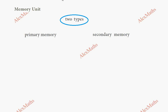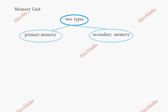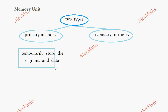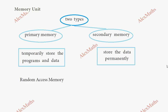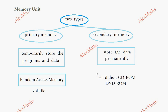There are two types of memory: primary and secondary. Primary memory includes RAM — random access memory — which is volatile memory, meaning if the power is switched off, the data is lost. Secondary memory includes hard disk, CD-ROM, and DVD. Even if the power is switched off, secondary memory stores the data permanently.